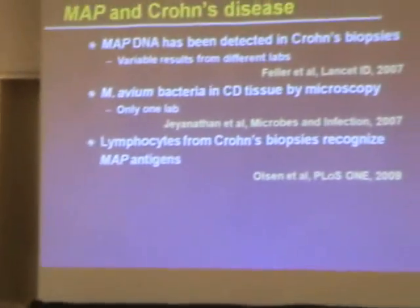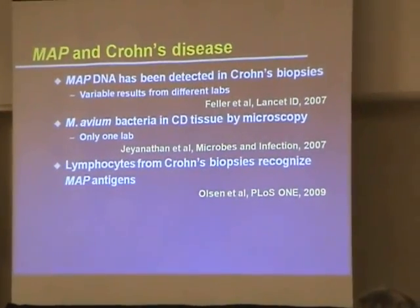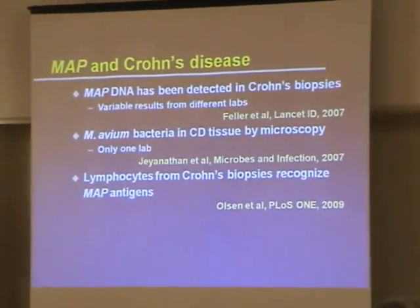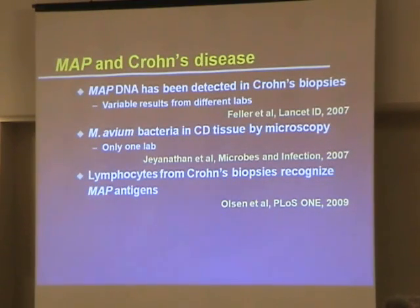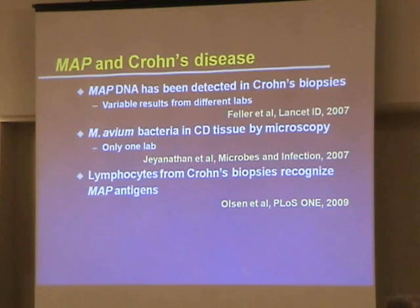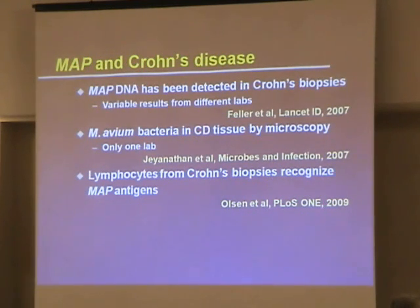What do we know about MAP and Crohn's disease? We know that DNA from this organism has been detected in Crohn's biopsies, and there seems to be a strong association, though results vary from lab to lab. MAP has also been seen by microscopy, but only by our lab, so it would be valuable to know if that's a reproducible observation. In science, nothing really counts when it's been done once — it has to be replicated at least two or three times before you start to believe it.